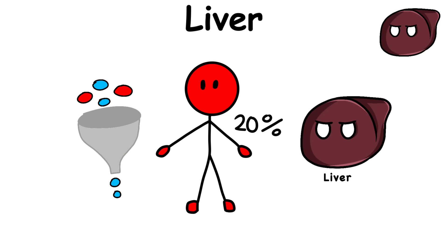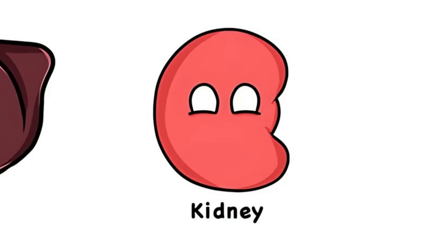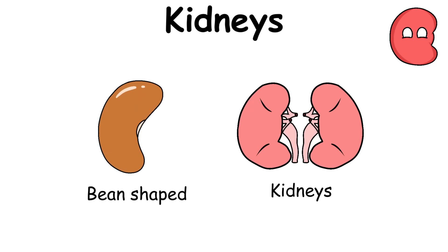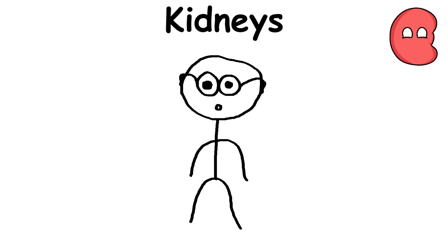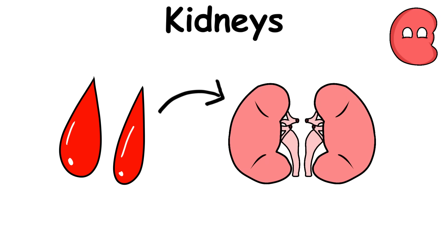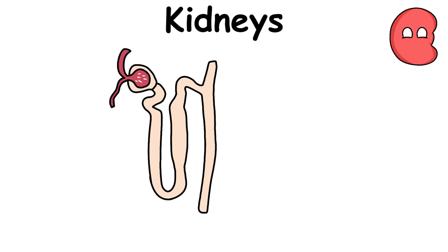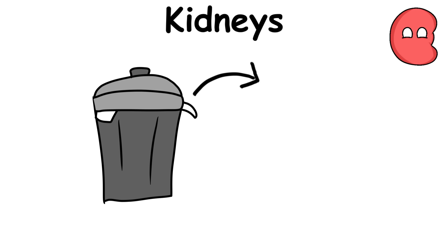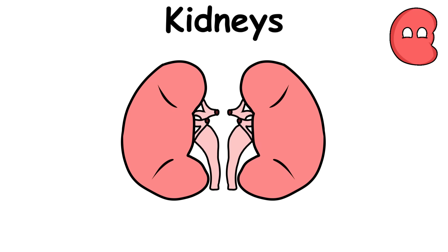Kidneys are a pair of bean-shaped organs that can be found just above the hips approaching the person's back. When blood flows into the kidneys, they filter waste into the urine using filtration units called nephrons. The waste is then washed out of the body through urination, making the kidneys important in removing any harmful waste products.